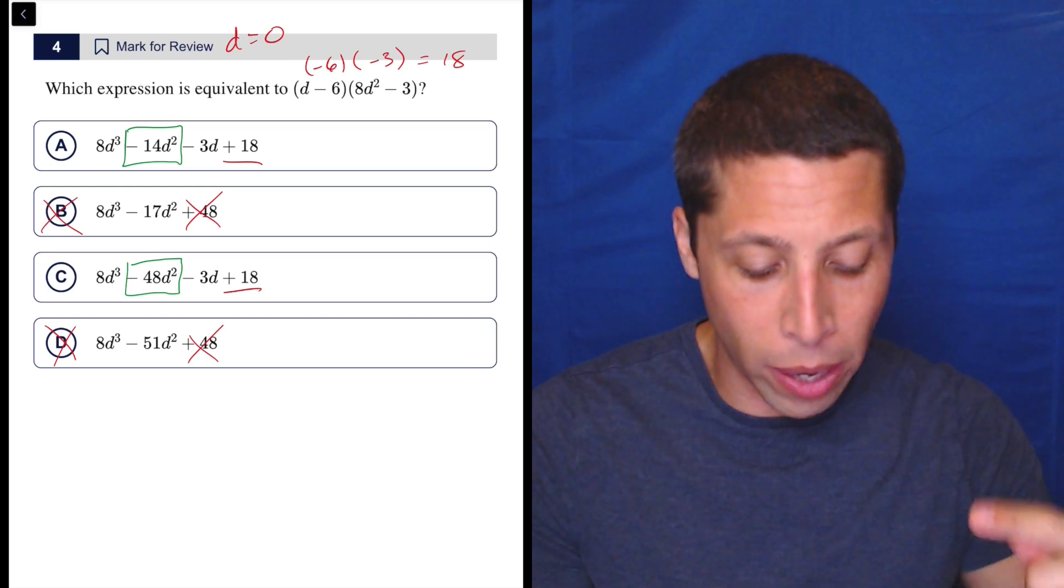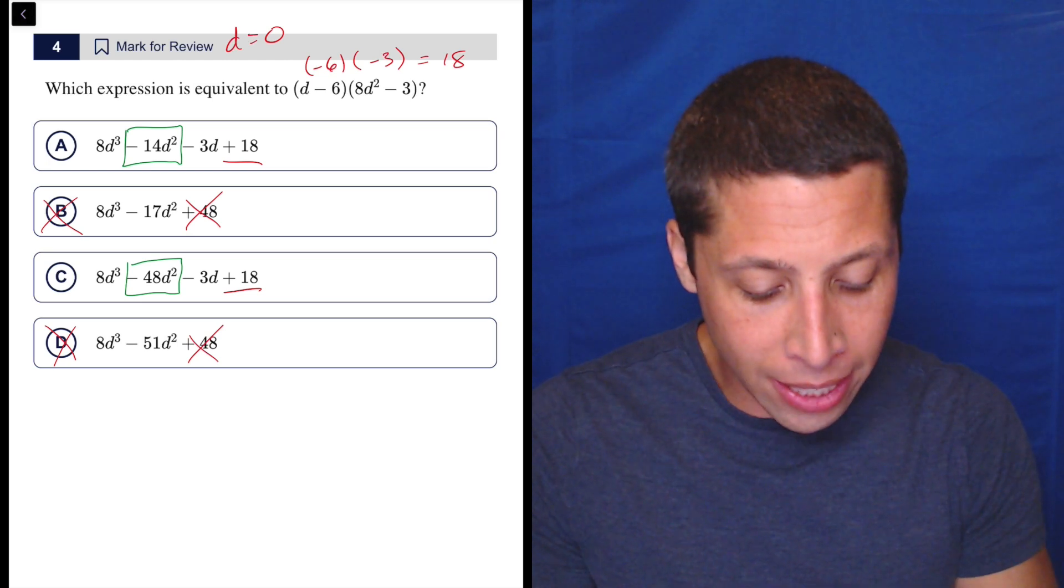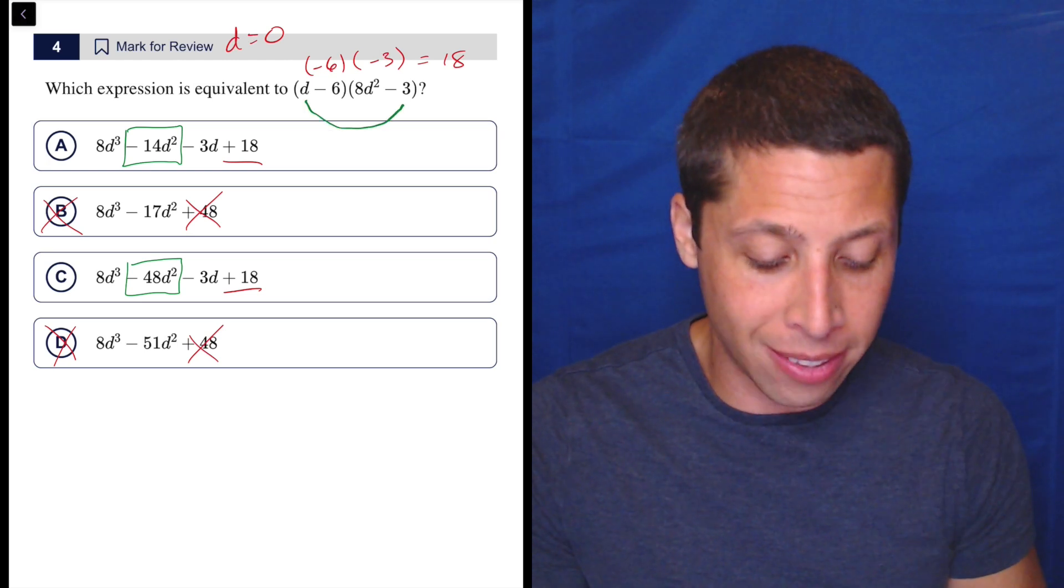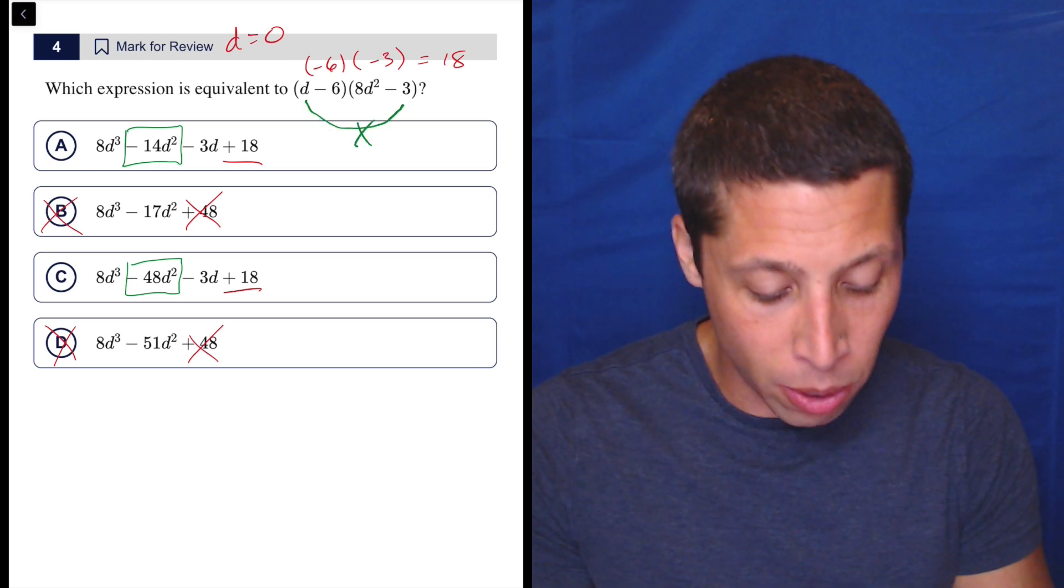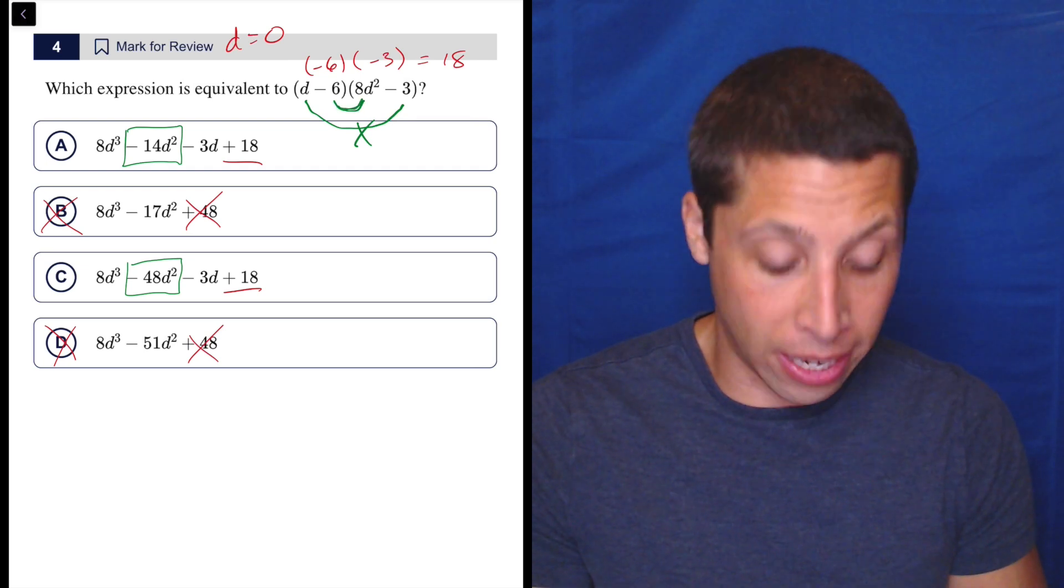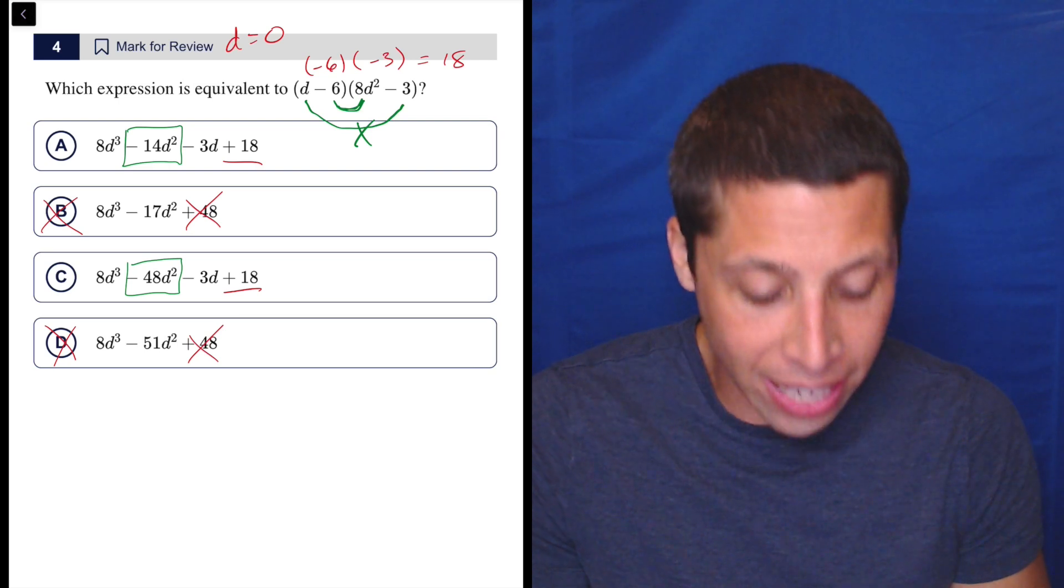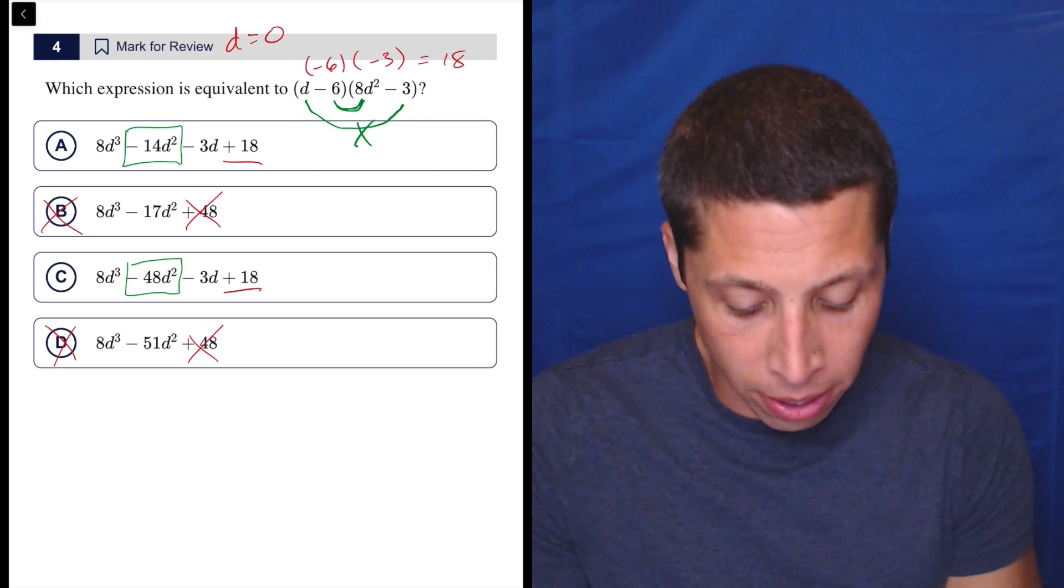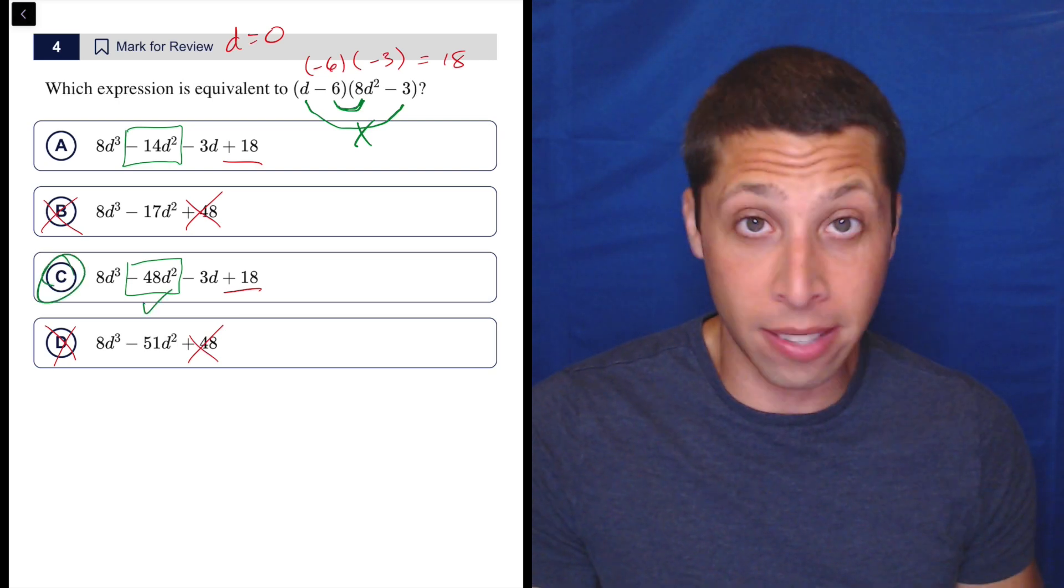let me think about how the D squareds are going to work. Am I going to get a D² by multiplying this D to the negative 3? No. The only way I'm going to get a D² is right here, the 8d² term and the negative 6. And what is that? That's negative 48d². So that's what I wanted. C is the answer.